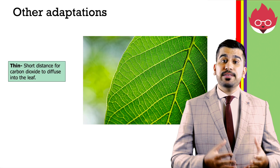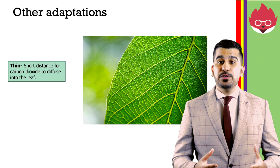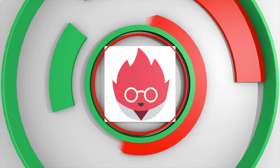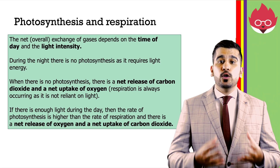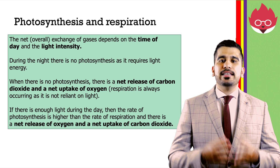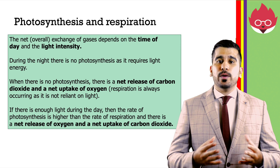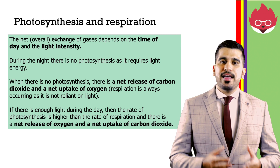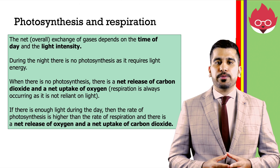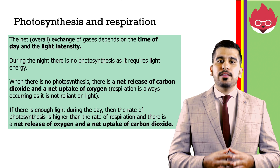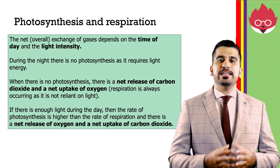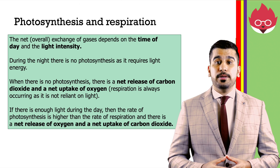Other adaptations include leaves being very thin, reducing the diffusion distance for carbon dioxide and oxygen to diffuse into and out of the leaf. The net — meaning overall — exchange of gases depends on the time of day and the light intensity. During the night, there is no photosynthesis as it requires sunlight, so there is a net release of carbon dioxide and a net uptake of oxygen for respiration. If there is enough light during the day, the rate of photosynthesis is higher than the rate of respiration, and there is a net release of oxygen and a net uptake of carbon dioxide.